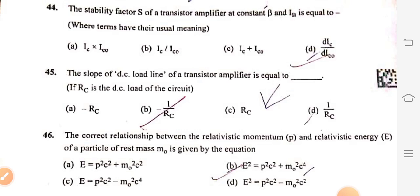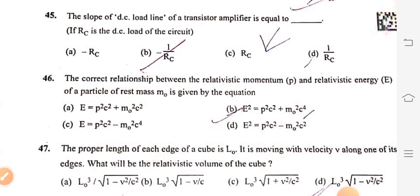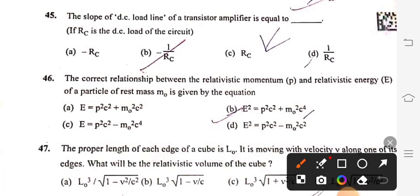Question 45: The slope of DC load line of a transistor amplifier is equal to minus 1 upon RC if RC is the DC load of the circuit. Question 46: The relationship between the relative momentum P and relativistic energy E of a particle of rest mass M0 is given by E square equals P square C square plus M0 square C to the power 4, option B.